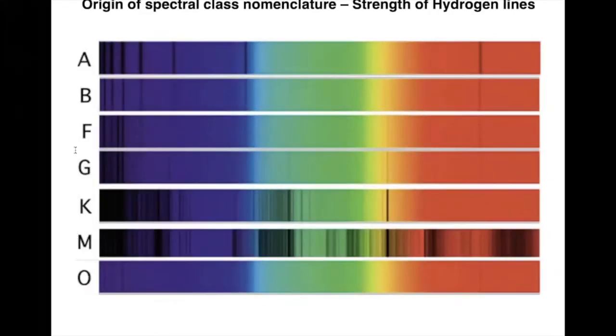Edward Pickering and Wilhelmina Fleming ranked the stars alphabetically according to how dark the strong Balmer lines of hydrogen were. Stars with the deepest hydrogen lines are said to be a spectro-type A.